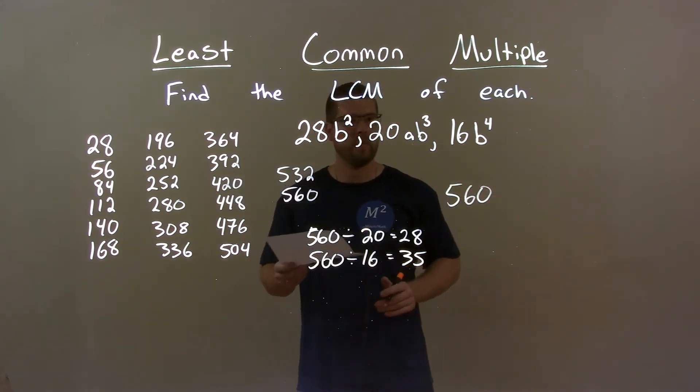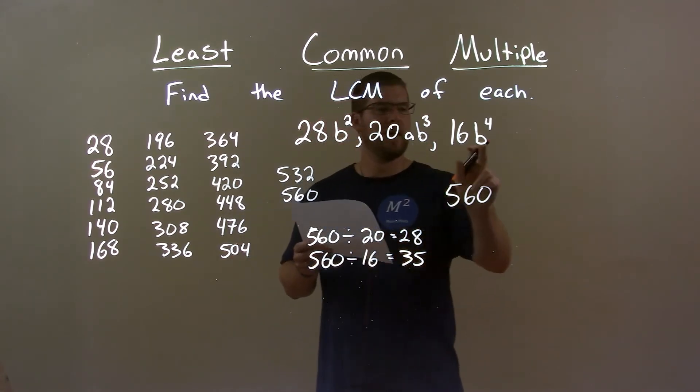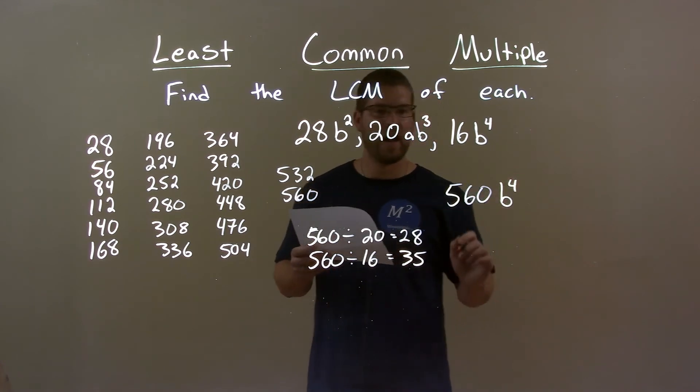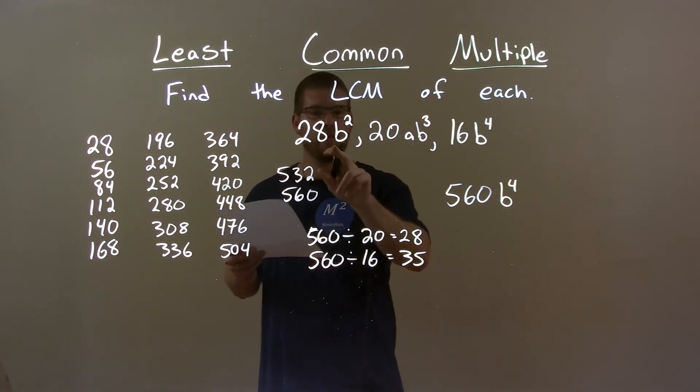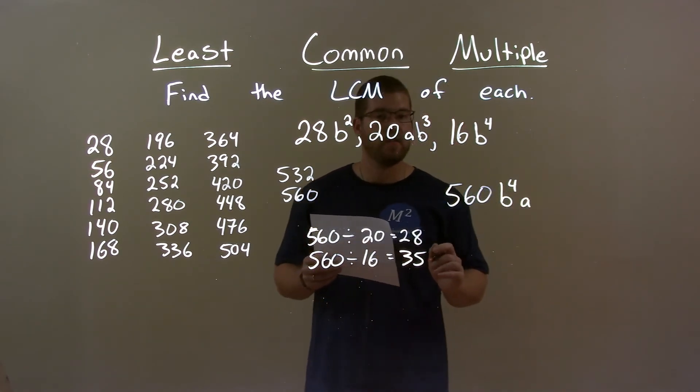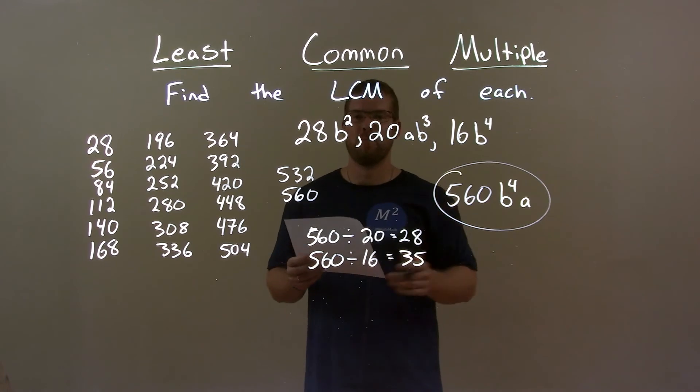Now we define the variables. We have two B's here, three B's here, and four B's there. So we have to get B to the fourth power. The other variable A: zero A's, one A, zero A. So we bring in one A. My final answer here is 560 B to the fourth power A.